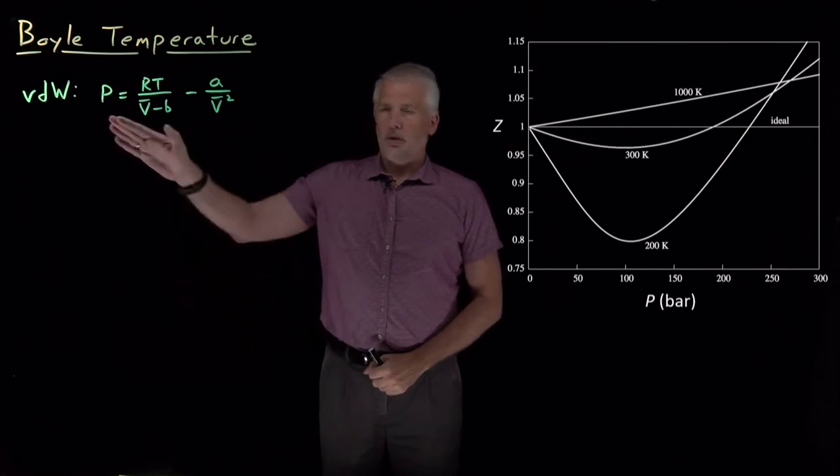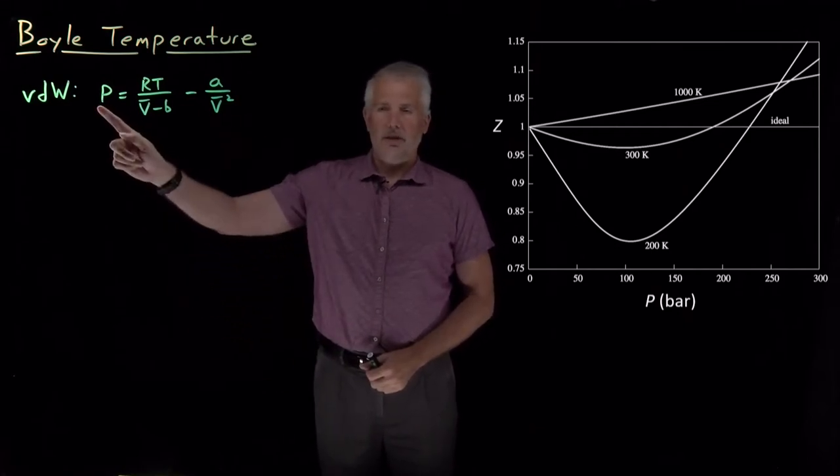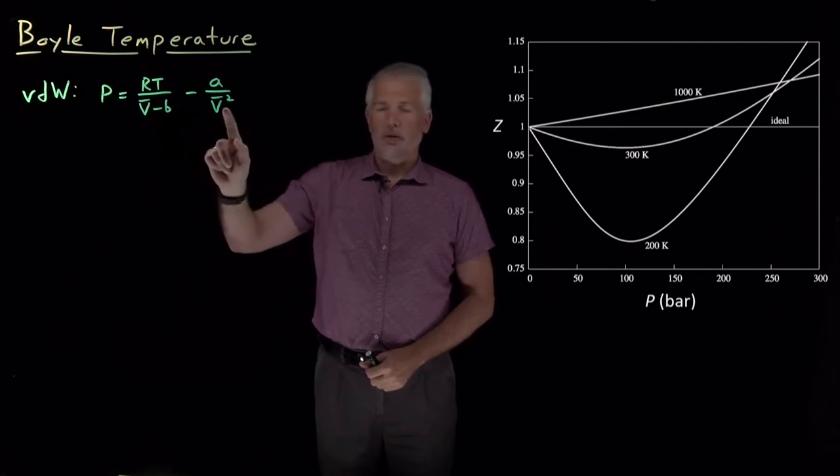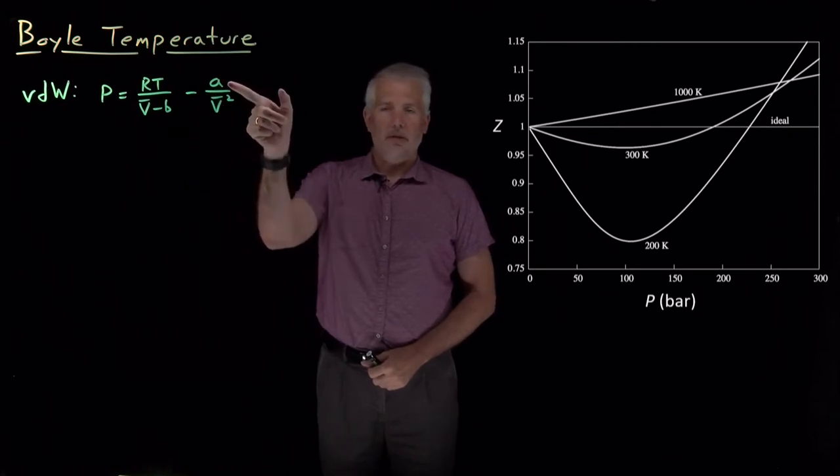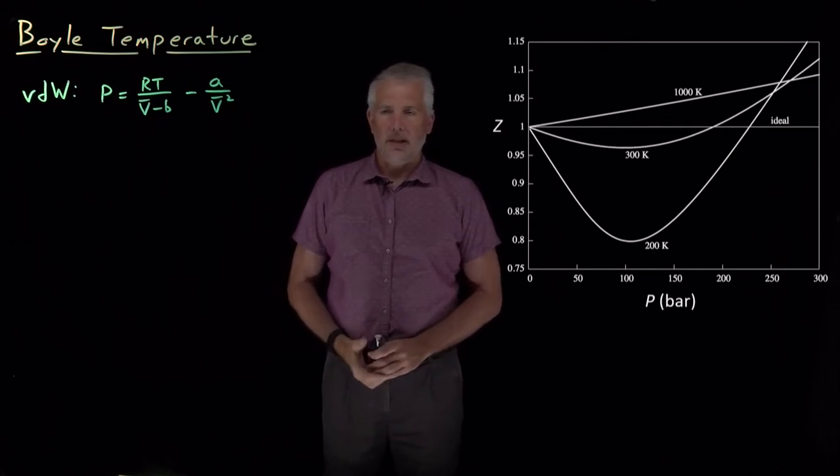All right, so we have the Van der Waals equation of state, which tells us how to calculate the pressure of a gas that obeys the Van der Waals model. If we know the temperature and the molar volume, but also these two constants A and B, the strength of the intermolecular interactions in the gas and the finite molecular volume of the molecules in the gas.